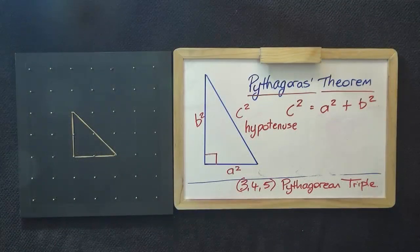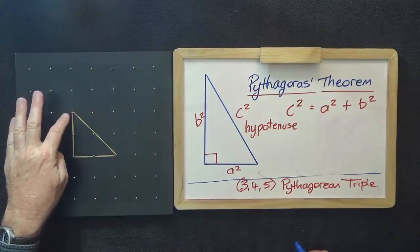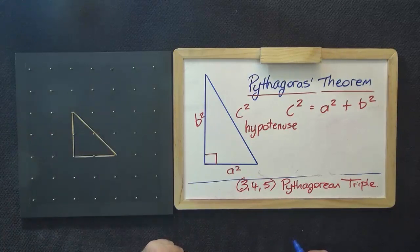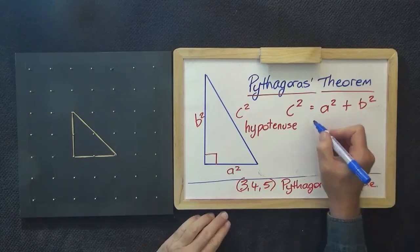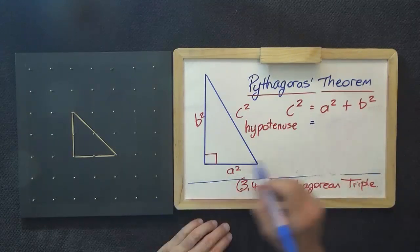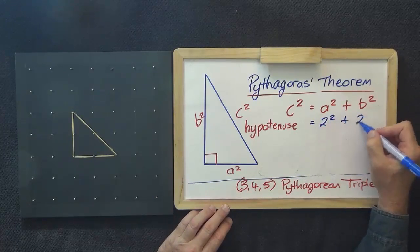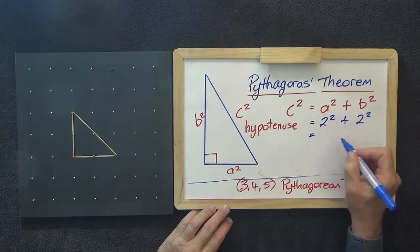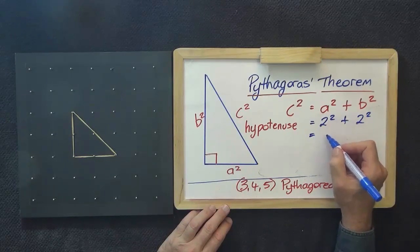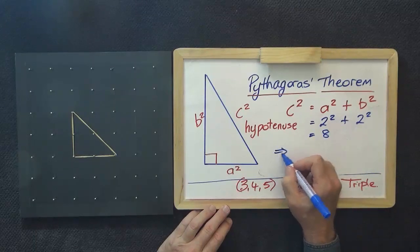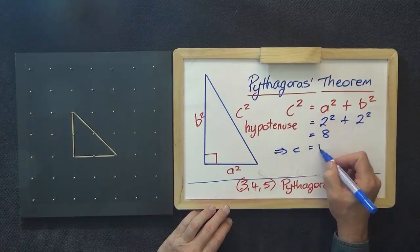For another example, I would like to use this triangle which is 2, a height of 2 and a base of 2. Again, it's an isosceles right triangle. So let's apply our formula. A squared is 2 squared. B squared is 2 squared. This equals 4 plus 4. This equals 8. So C is root 8.